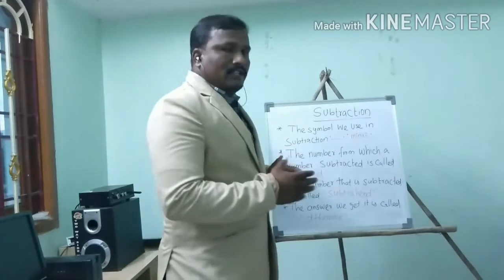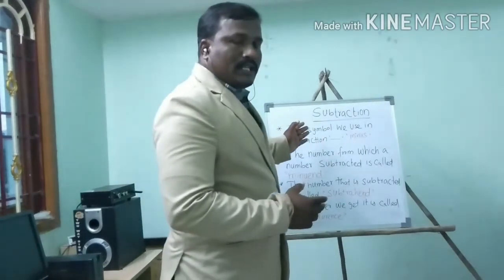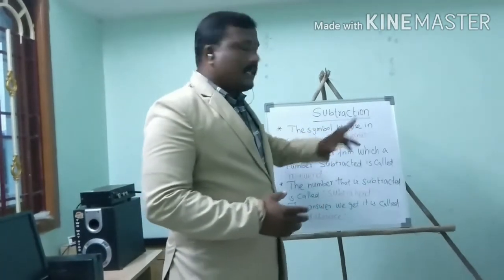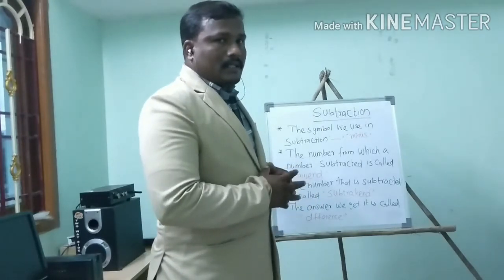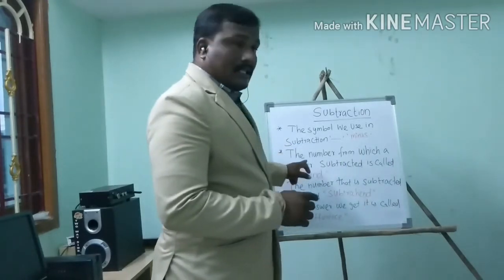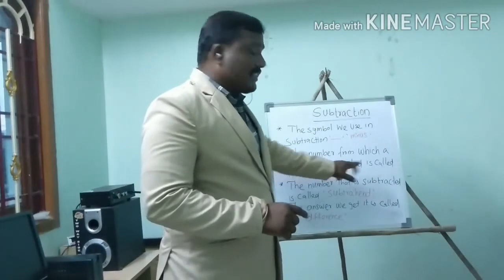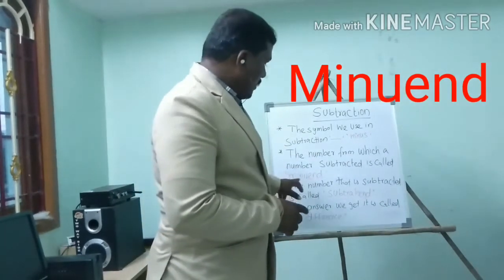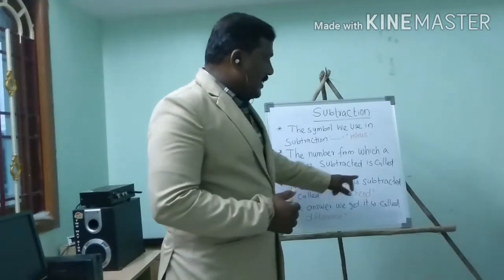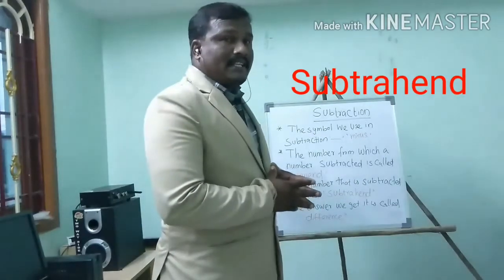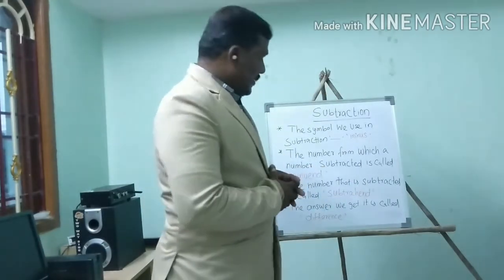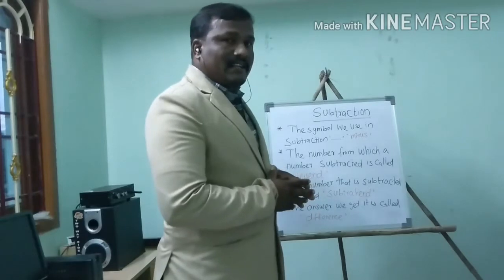When you do subtraction, you may use this symbol — the minus symbol. First procedure: the number from which a number is subtracted is called minuend. The second one: the number that is subtracted is called subtrahend. And the answer we get is called difference.